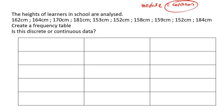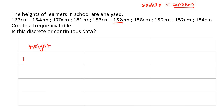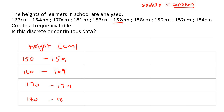When you have continuous data, you're not going to put individual numbers like 152 or 153. When doing continuous data you make intervals. So you're going to say 150 to 159 centimeters, then 160 to 169, 170 to 179, and 180 to 189. I didn't start at 140 because there are no 140s in the data, and I didn't go up to 190 because there are no 190s. Then you can add a tally column and a frequency column.